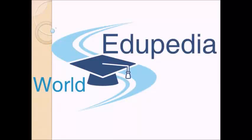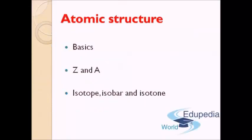Welcome back to Eriperia World. Today we will start a new concept and discuss what is known as atomic structure. We will see the basic idea: what is the atomic structure, what is the basic formation of an atom, and what are the components of an atom. Then we will see the atomic number Z and atomic mass number A. Finally, we will conclude by studying three terminologies: isotope, isobar, and isotone.